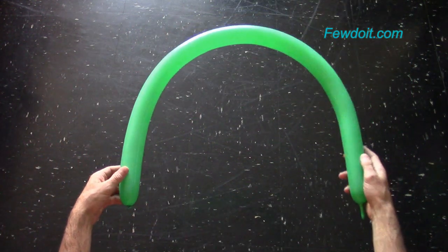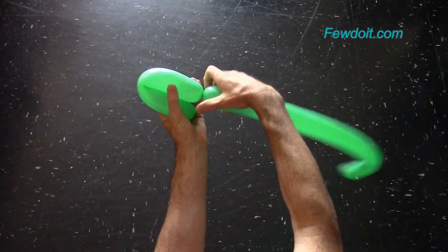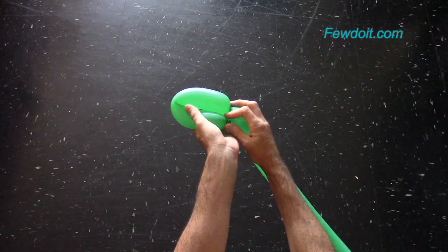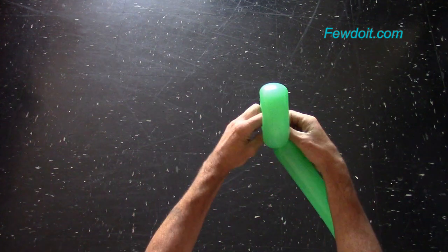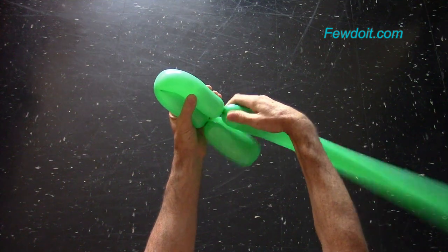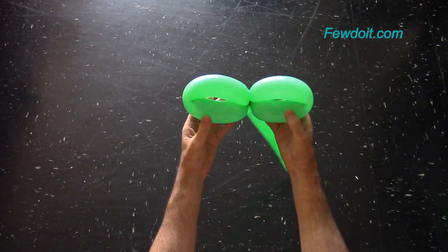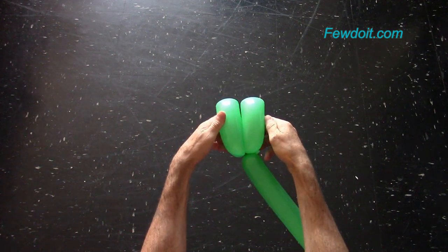Inflate a green balloon leaving about 2 cm flat tail. Now let's twist about 25 cm long bubble. Lock both ends of the first bubble in one lock twist. Twist the second bubble of the same size as the first bubble, about 25 cm long. Lock both ends of the second bubble in one lock twist.